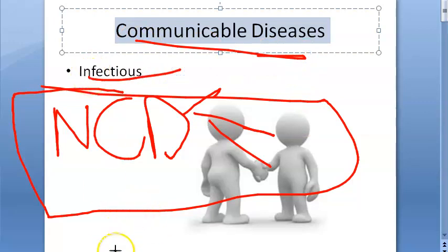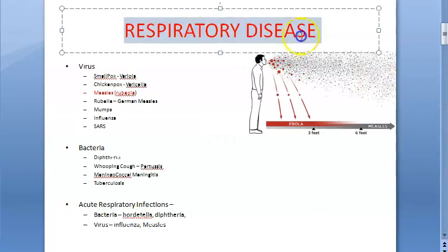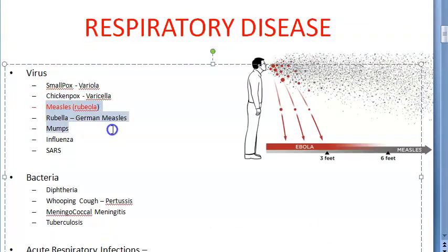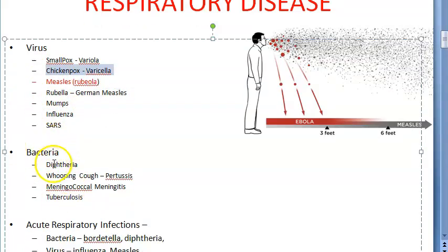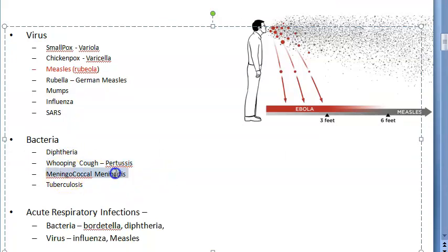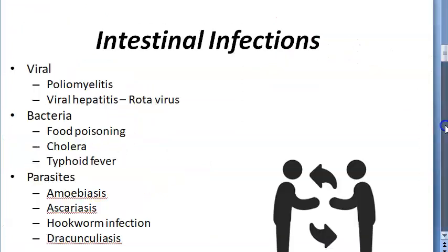There are many types. First, respiratory diseases — many examples are there: measles, mumps, rubella, influenza (flu), SARS, and chickenpox are viral respiratory diseases. Bacterial examples include diphtheria, whooping cough (pertussis), meningococcal meningitis, and tuberculosis — all bacterial respiratory diseases.